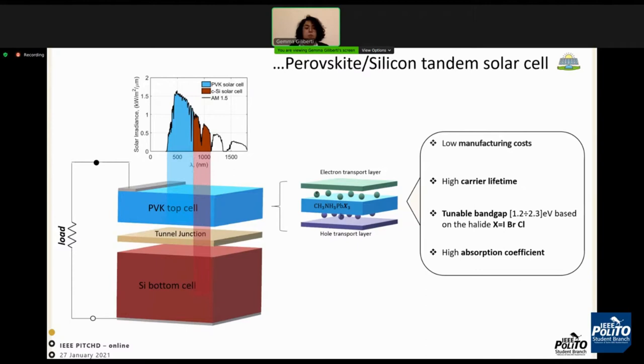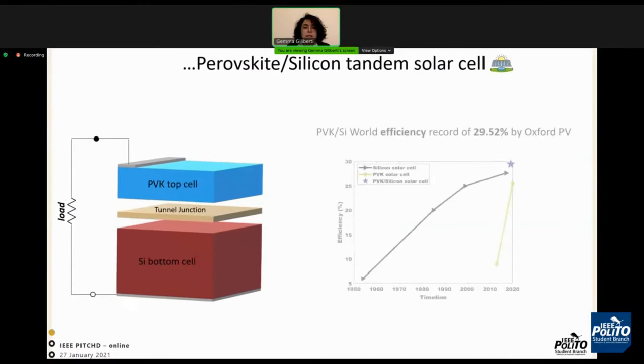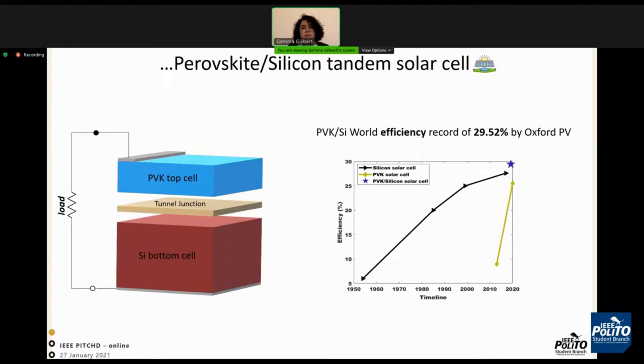The high absorption coefficient and these features make the perovskite solar cell an ideal top subcell of the silicon-based tandem solar cell. Actually, the perovskite-silicon world efficiency record is around 29.52% achieved by Oxford Photovoltaics.